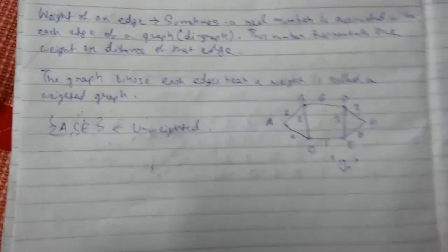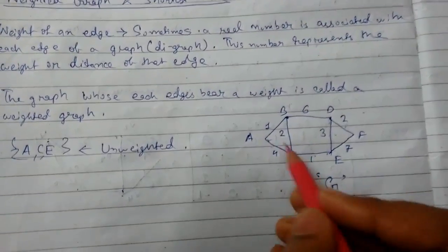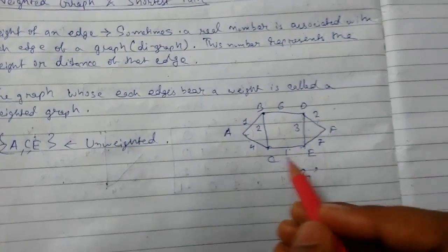Now for weighted graphs, the shortest path will be that path where the sum of the weight of the edges will be minimum.